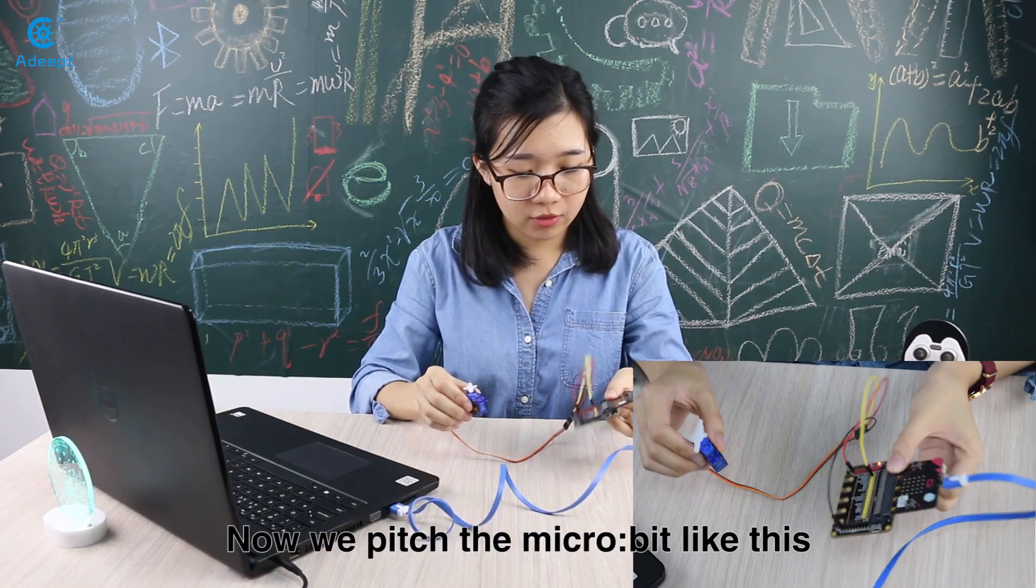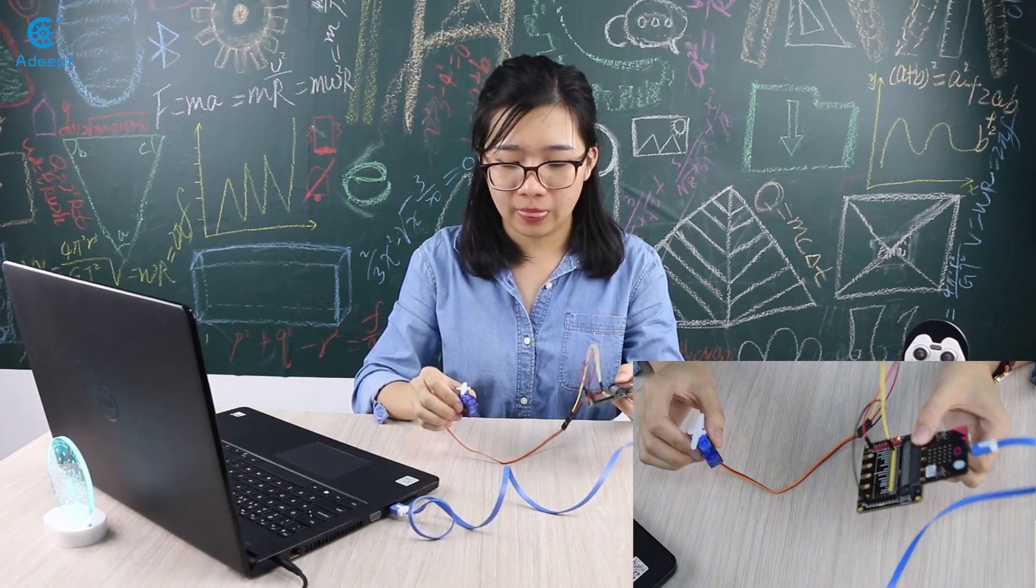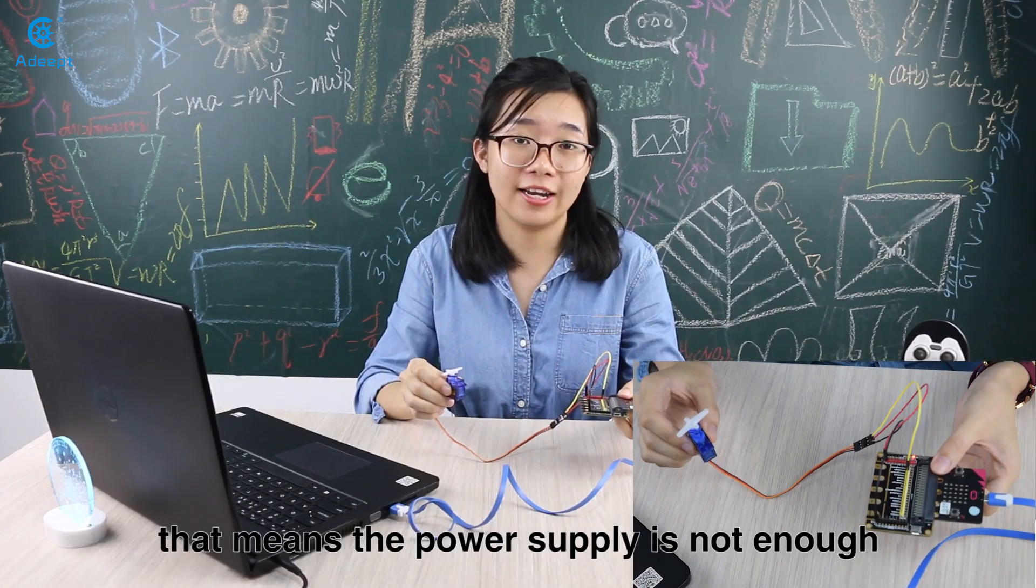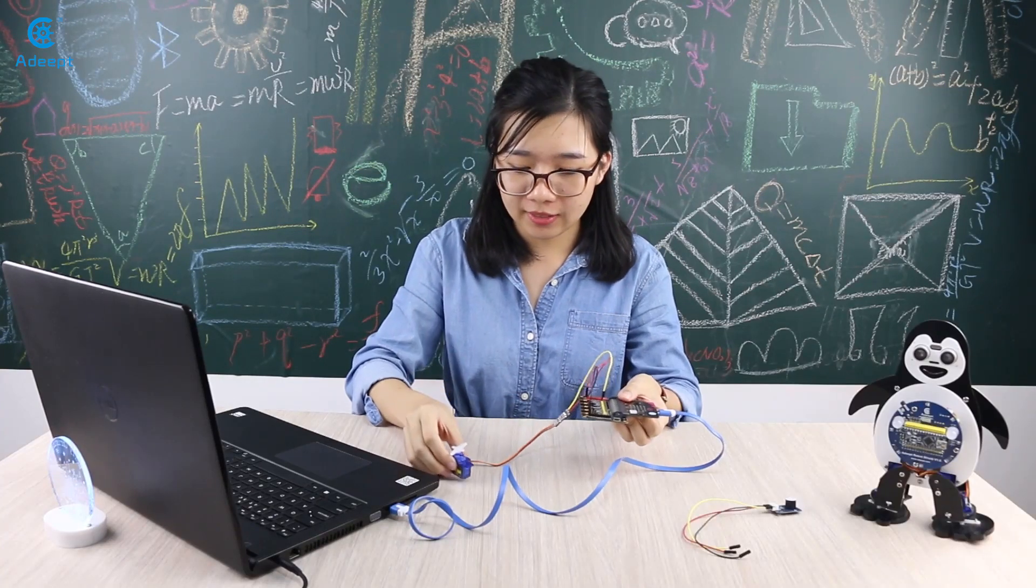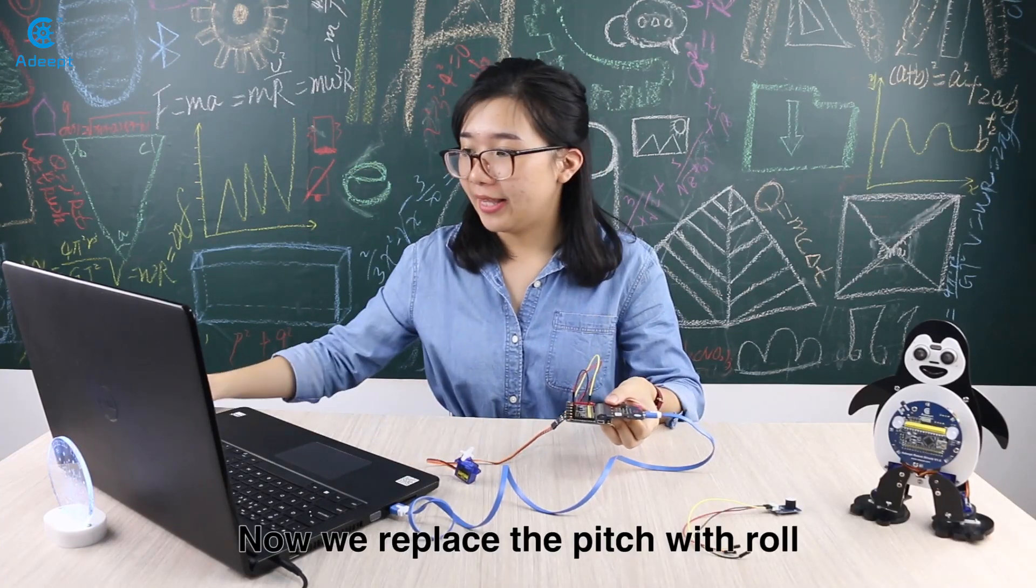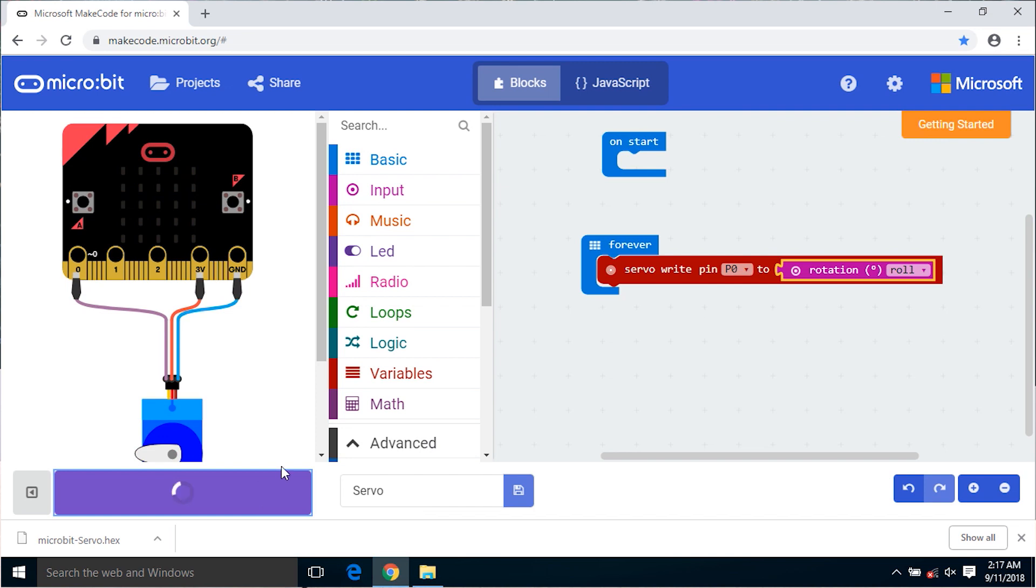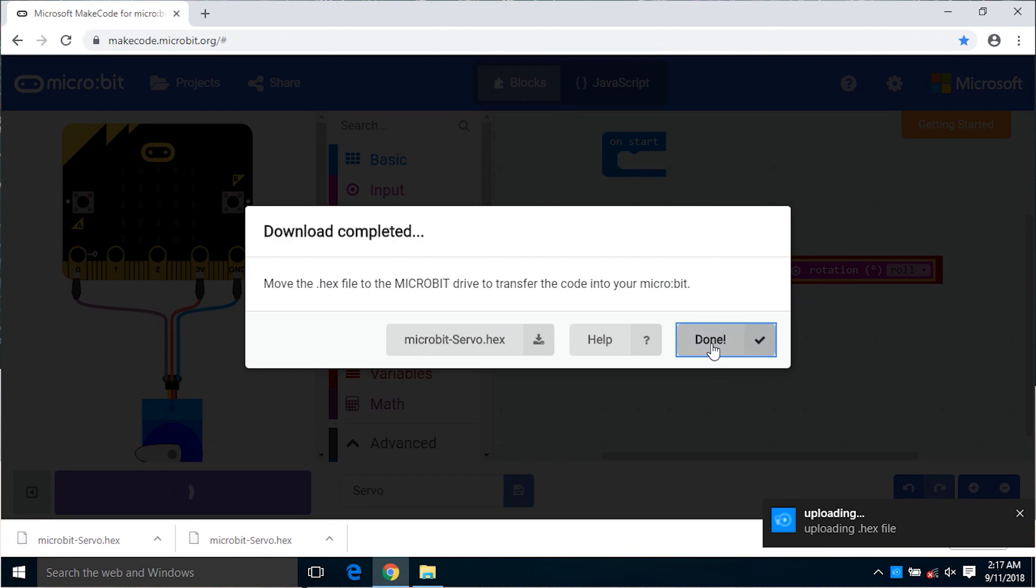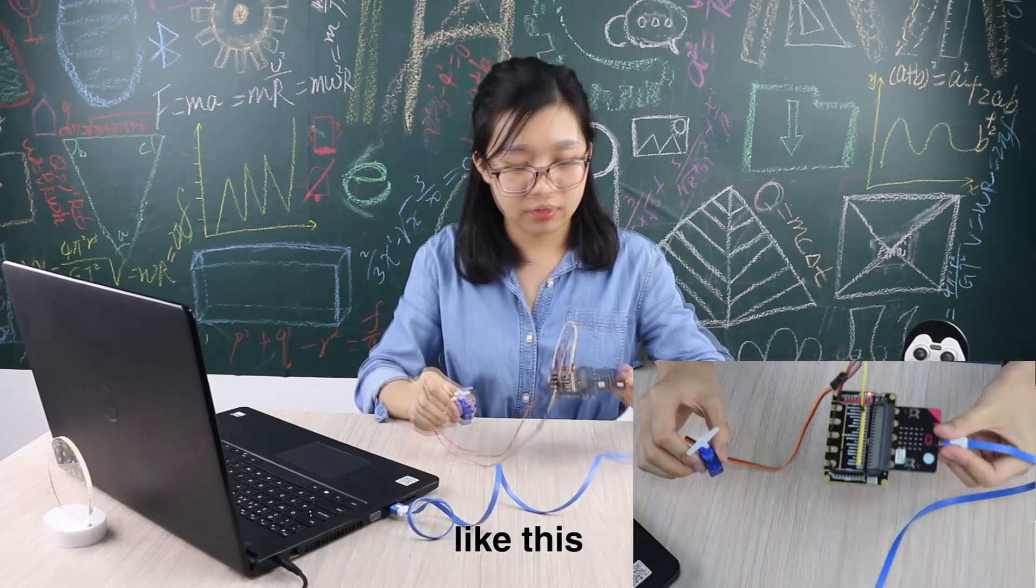Now we pitch the micro:bit like this, the servo will change. And if the servo changes slowly that means the power supply is not enough. Now you can connect an external power source here. Now we replace the pitch with roll. Click download, wait until it's done. Now we roll the micro:bit like this, the servo will change correspondingly.